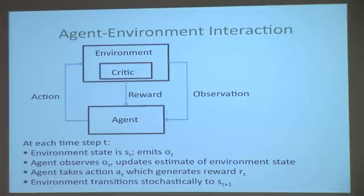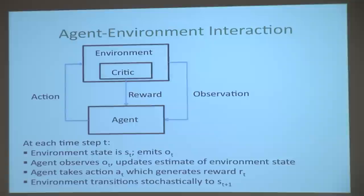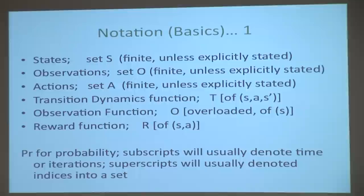This closed-loop interaction happens between agent and environment, and our objective is for the agent to learn how to act. Some notation: states are set S, observations are set O, actions are set A. Transition dynamics T: T(S, A, S') is the probability of transitioning to S' when the agent does action A in state S. Reward R(S, A) is the reward the agent gets when taking action A in state S. Subscripts usually denote time; superscripts will denote indices into a set.